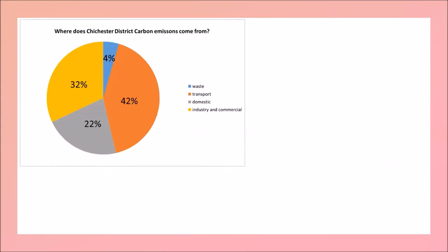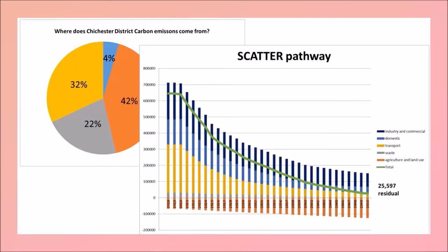Where do the district's carbon emissions come from? Focusing on four areas — agriculture is actually negative because tree planting reduces carbon — the positive carbon emissions show transport is the biggest emitter of carbon in the district. Putting that into SCATTER, projecting from 2018 to 2050, the biggest reduction modeled is in transport.